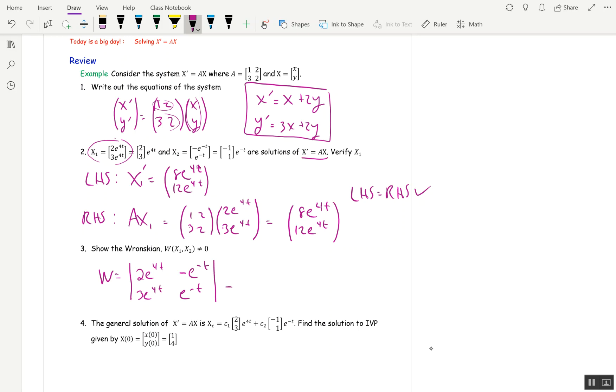Take the determinant. That's 2e^(3t) - (-3e^(3t)) = 5e^(3t), which is never 0.